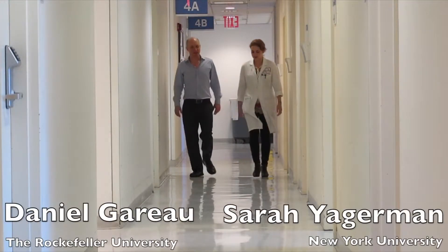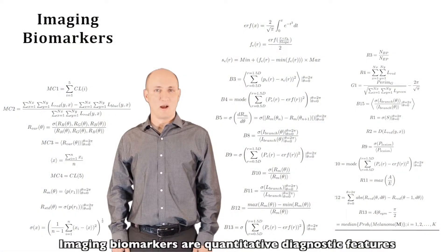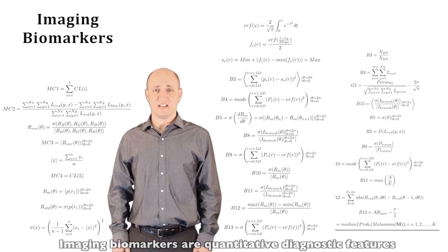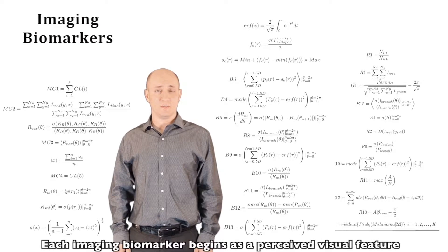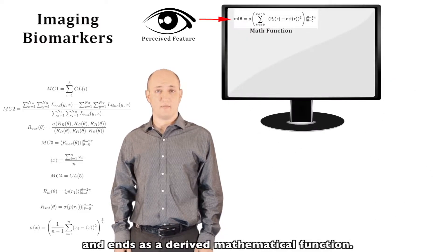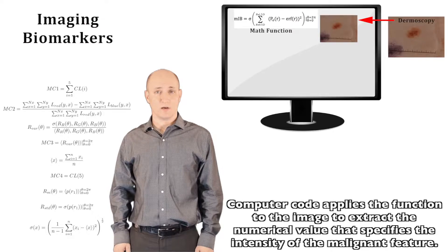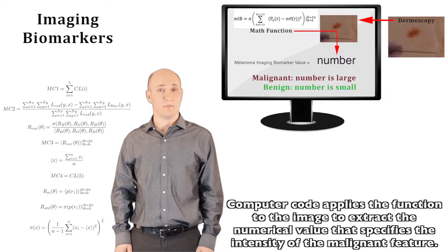Researchers in New York City are combining imaging with machine learning to improve early detection of melanoma. Imaging biomarkers are quantitative diagnostic features extracted using image processing. Each imaging biomarker begins as a perceived visual feature and ends as a derived mathematical function. Computer code applies the function to the image to extract the numerical value that specifies the intensity of the malignant feature.